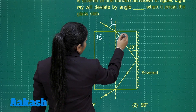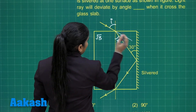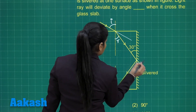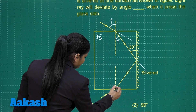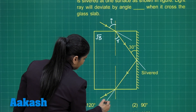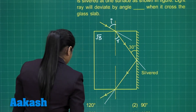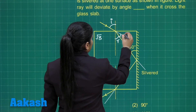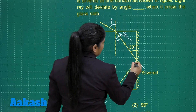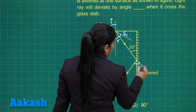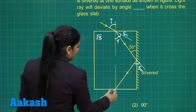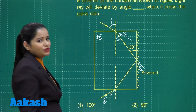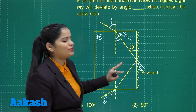Here, this was the direction of the incident ray. So basically, this is the deviation that I can mark as delta 1, this is the deviation I can mark as delta 2, and this is the deviation I can mark as delta 3. We need to calculate delta 1, delta 2, and delta 3.